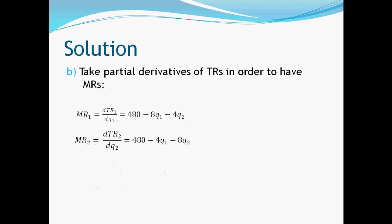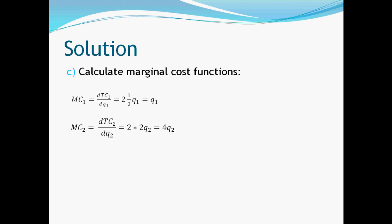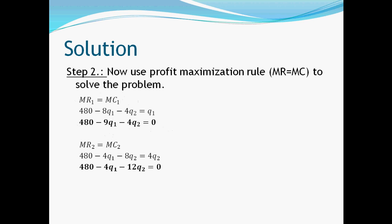After that, let's take the partial derivatives of total revenue with respect to q1 and q2. The same has to be done for the cost functions in order to discover the marginal cost of the two actors. Now we are ready to use the profit maximization rule. A little bit of rearrangement is advised, in order to have zero on the right side of the equations.